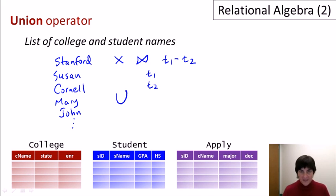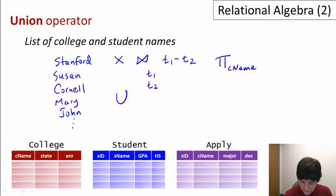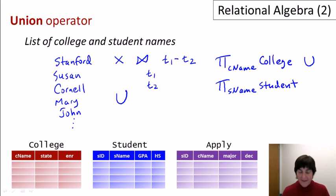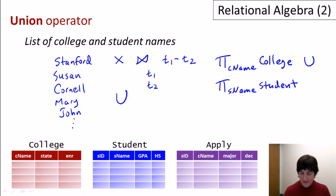To get a list of college names and student names, we'll project the college name from the college relation — giving us a list of college names — then similarly project the student name from the student relation. We apply the union operator between those two lists and that gives us our result. Technically in relational algebra, to union two lists they must have the same schema, meaning the same attribute name, and these don't — but we'll correct that later.